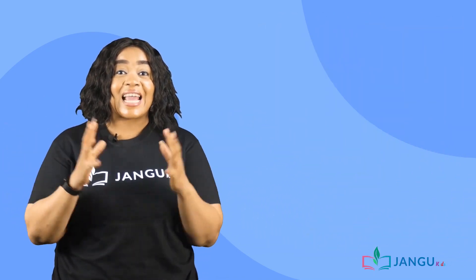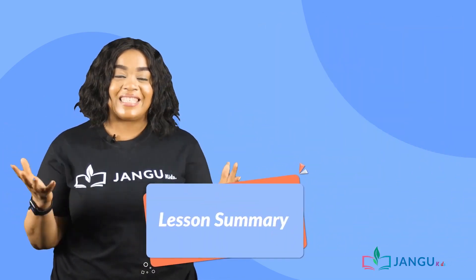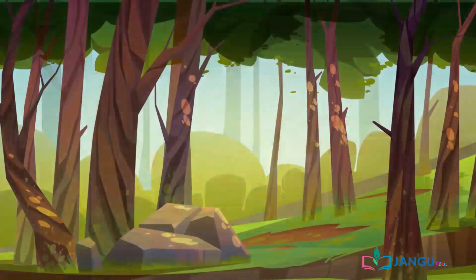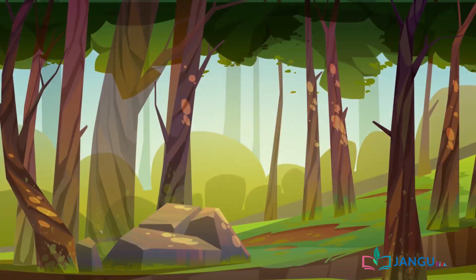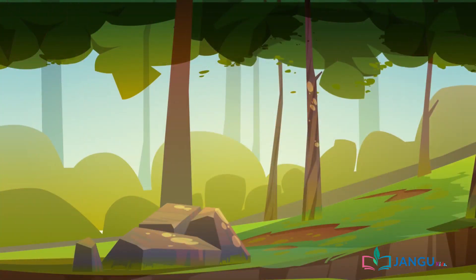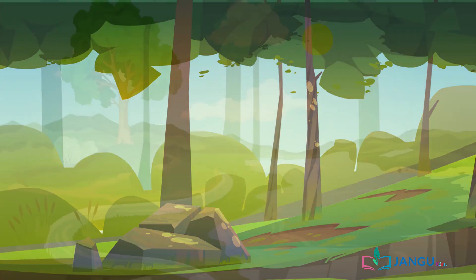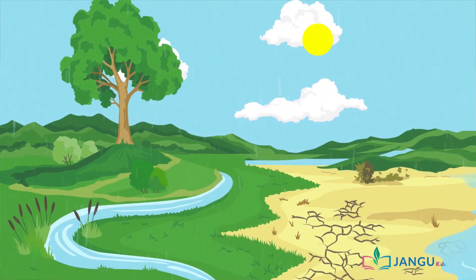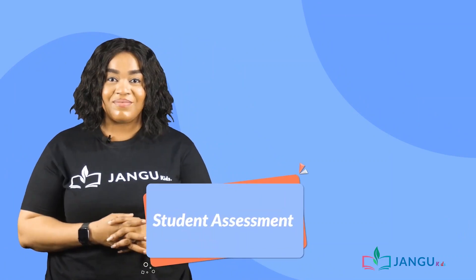This brings us to the end of the lesson. Today we learned that deforestation in simple terms means the removal of a forest and it is an environmental hazard. We also talked about reasons and effects of deforestation and government regulations against deforestation. See you in the next lesson.